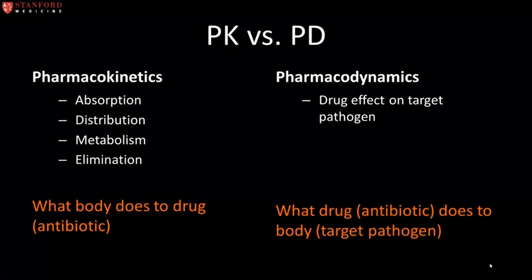The pharmacokinetics of an antibiotic describes its disposition within the body, including its absorption, distribution, metabolism, and elimination. Whereas antibiotic pharmacodynamics examines the relationship between the measured drug concentration in the serum, tissue, and body fluid, and its antimicrobial effect on the target organism. Simply put, pharmacokinetics is what the body does to the drug, and pharmacodynamics is what the drug does to the body, or in our case, what the antibiotic does to the target organism.